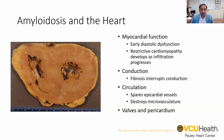The amyloid not only disrupts muscle function, it will deposit and disrupt conduction in the heart, often leading to heart block and pacemaker dependence. Patients, because of stretching of the atria and amyloid deposition in the upper chambers, often have atrial fibrillation or other atrial arrhythmias. The amyloid deposits can also affect the valves and the pericardium, and there is a higher prevalence of aortic stenosis because of amyloid deposition in patients with amyloidosis.